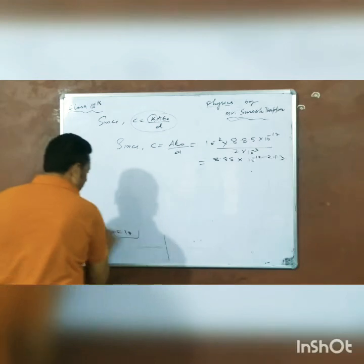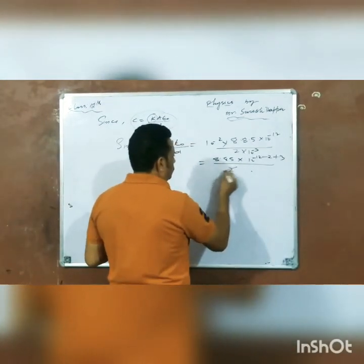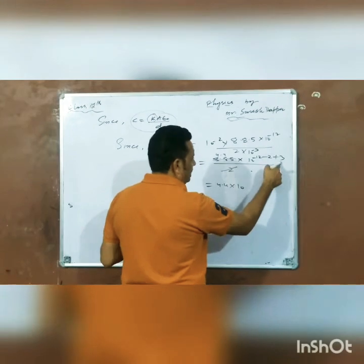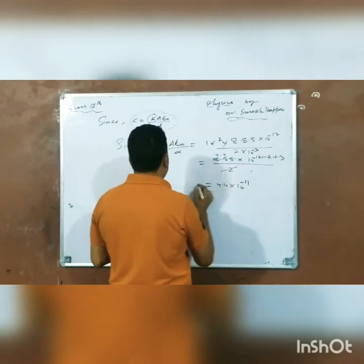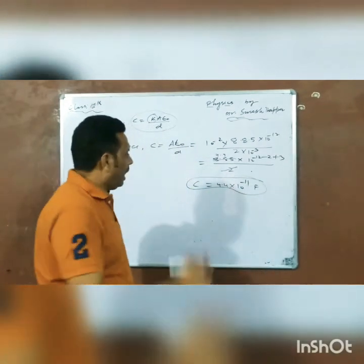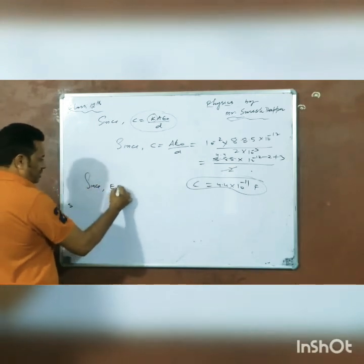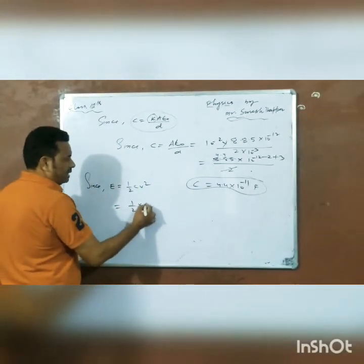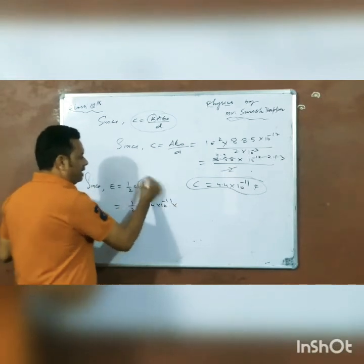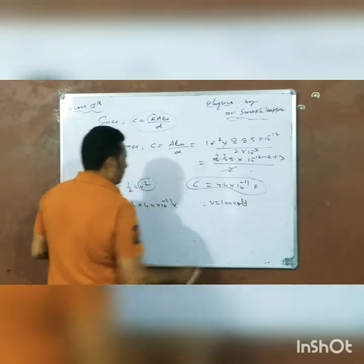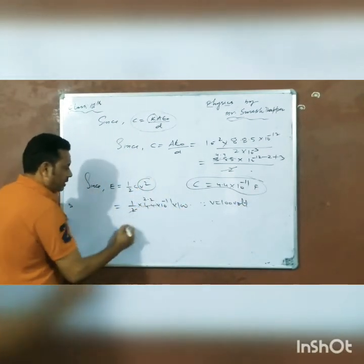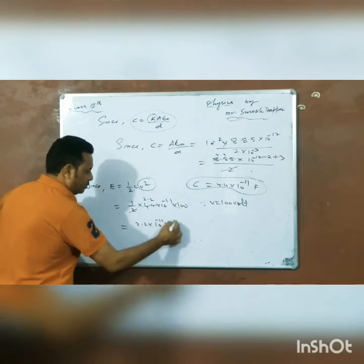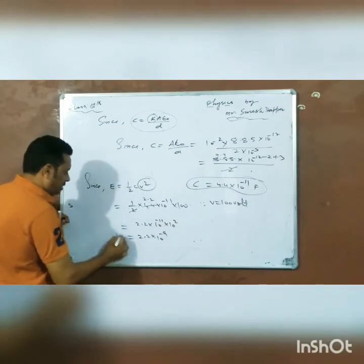A is 10 to the power minus 2, epsilon naught is 8.85 times 10 to the power minus 12, and D is 10 to the power minus 3. After calculation, C equals 4.4 times 10 to the power minus 11. Now for energy stored in the capacitor, it is 1 by 2 C V squared. So 1 by 2 into 4.4 times 10 to the power minus 11 times 100 squared.